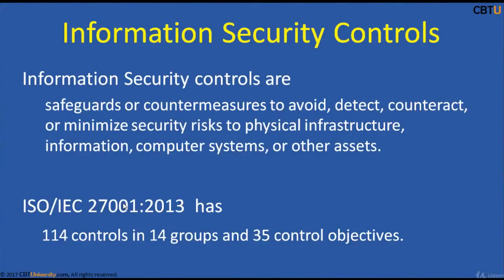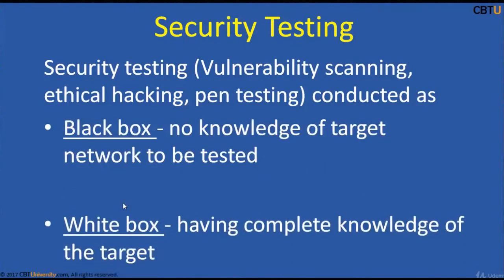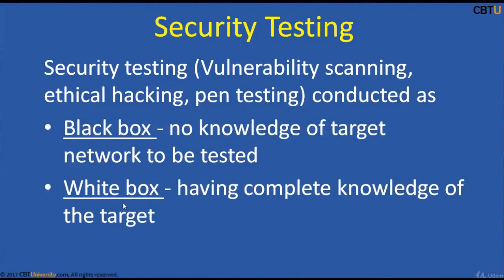ISO/IEC 27001 has 114 controls in 14 groups and 35 control objectives. Security Testing includes Vulnerability Scanning and Ethical Hacking or Penetration Testing. This is conducted in two environments: Black Box, where there is no knowledge of the target network to be tested, and White Box, where there is complete knowledge of the target.